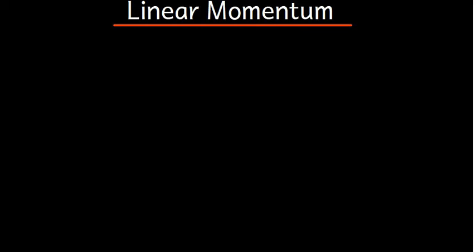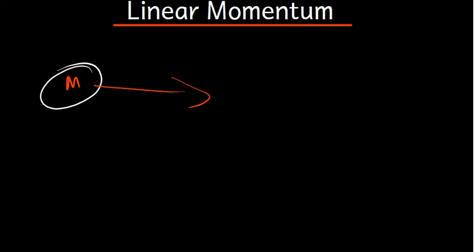In this tutorial, we are going to talk about linear momentum. So what is linear momentum? Let's say you have an object moving in this direction. This object is going to have a mass. Since it's moving, it is going to have a velocity. When something is moving and that object has mass and velocity, then we have what we call momentum. Momentum can be defined as the product of mass and velocity.